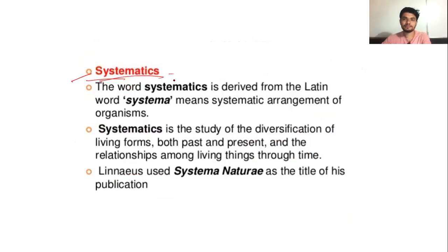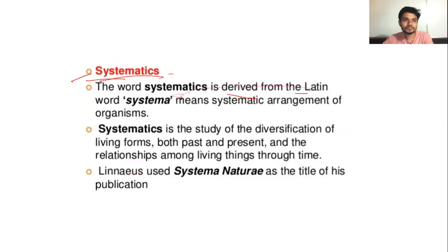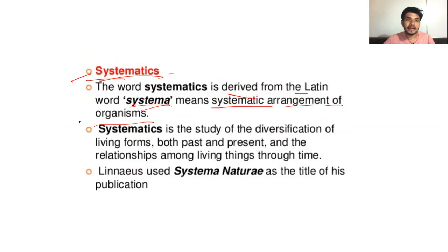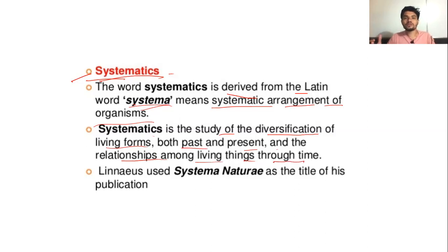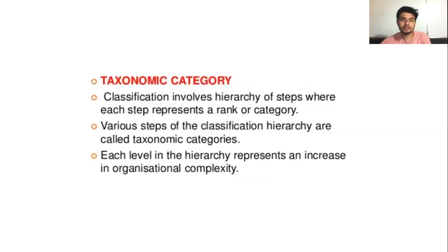After that, systematics. The word systematics is derived from the Latin word 'systema', meaning systematic arrangement of organisms. Systematics is the study of diversification of living forms both past and present, and the relationships among living things through time. So what is the relationship between two groups — that will be studied in the process of systematics. Linnaeus used 'Systema Naturae' as the title of his publication.